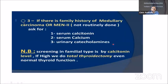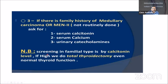If the patient has a family history of medullary carcinoma or multiple endocrine neoplasia type 2, you may want to do serum calcitonin — because medullary carcinoma releases calcitonin — as well as serum calcium and urinary catecholamines. Screening a family with this type of carcinoma is very important, because in these patients you may want to do total thyroidectomy.